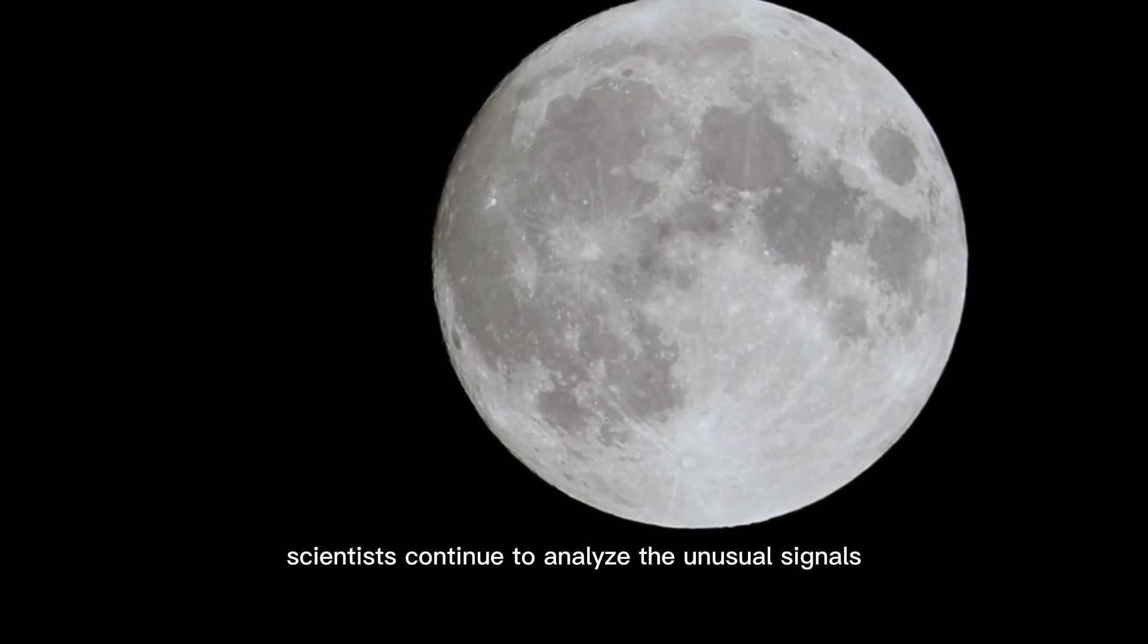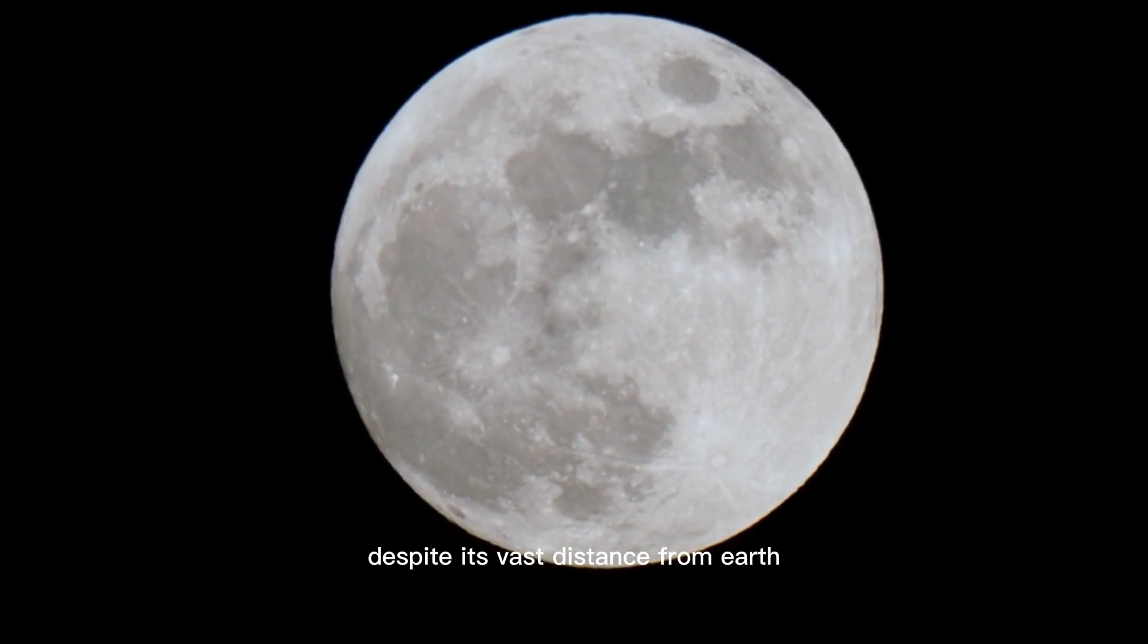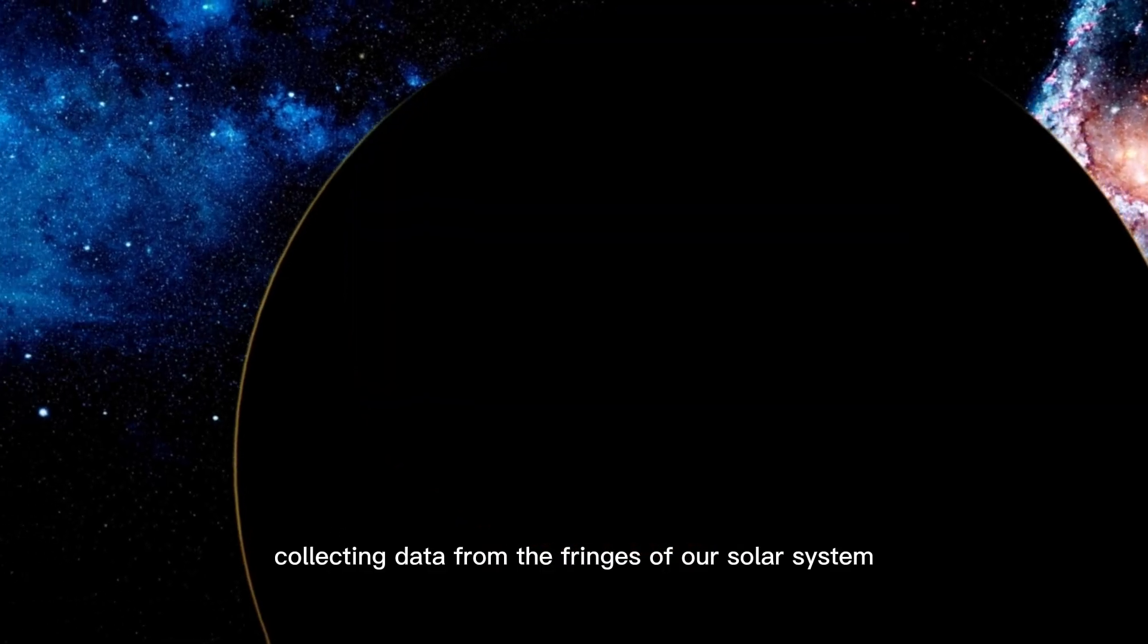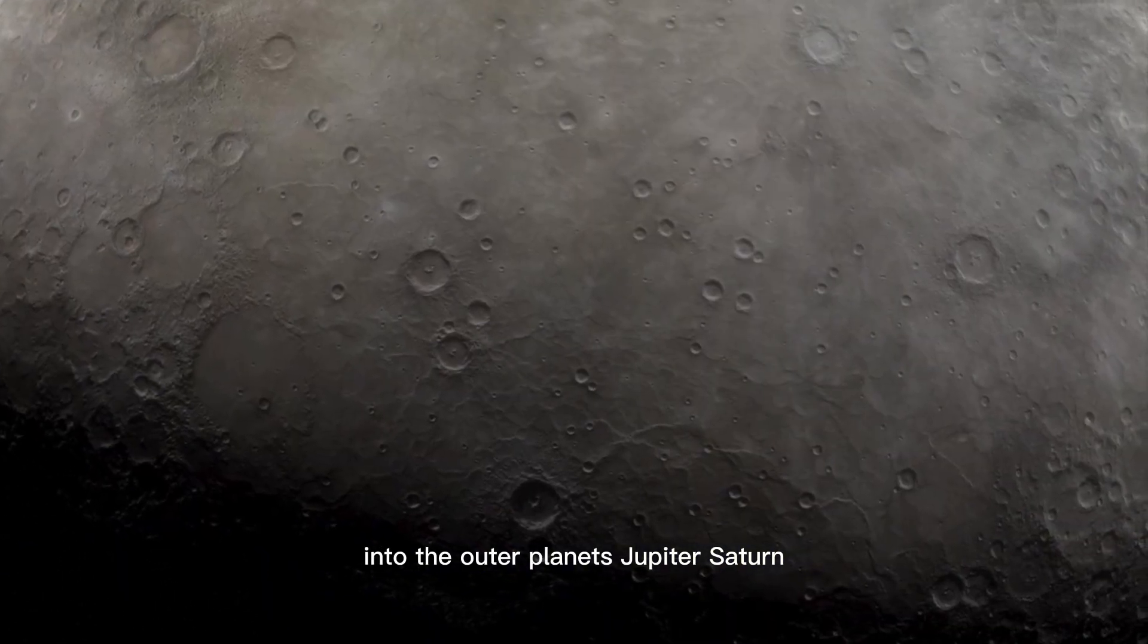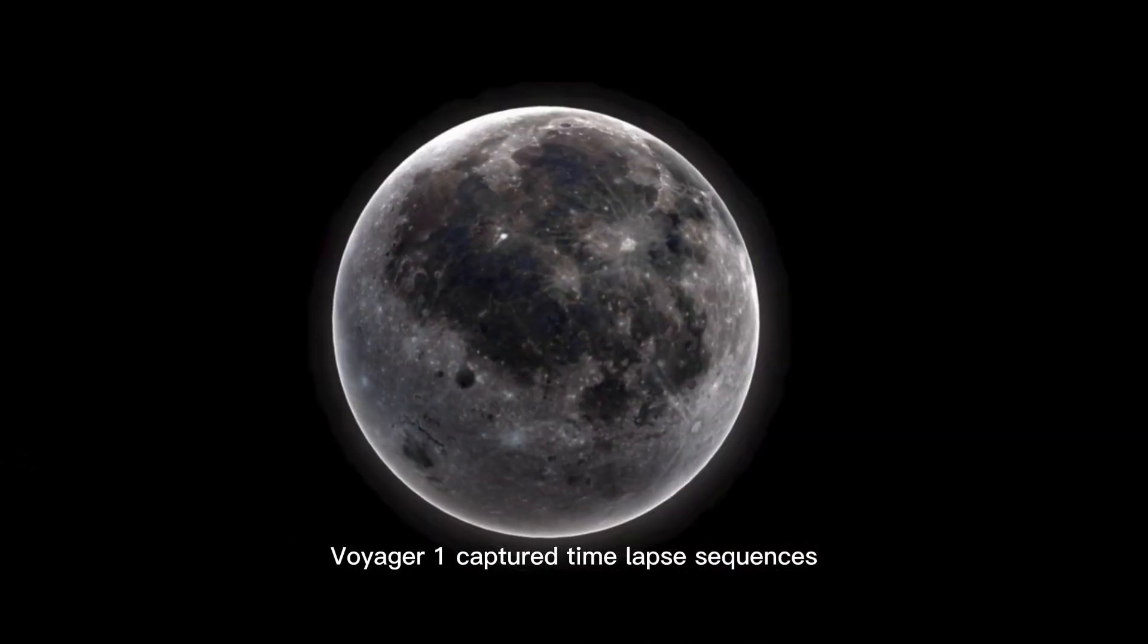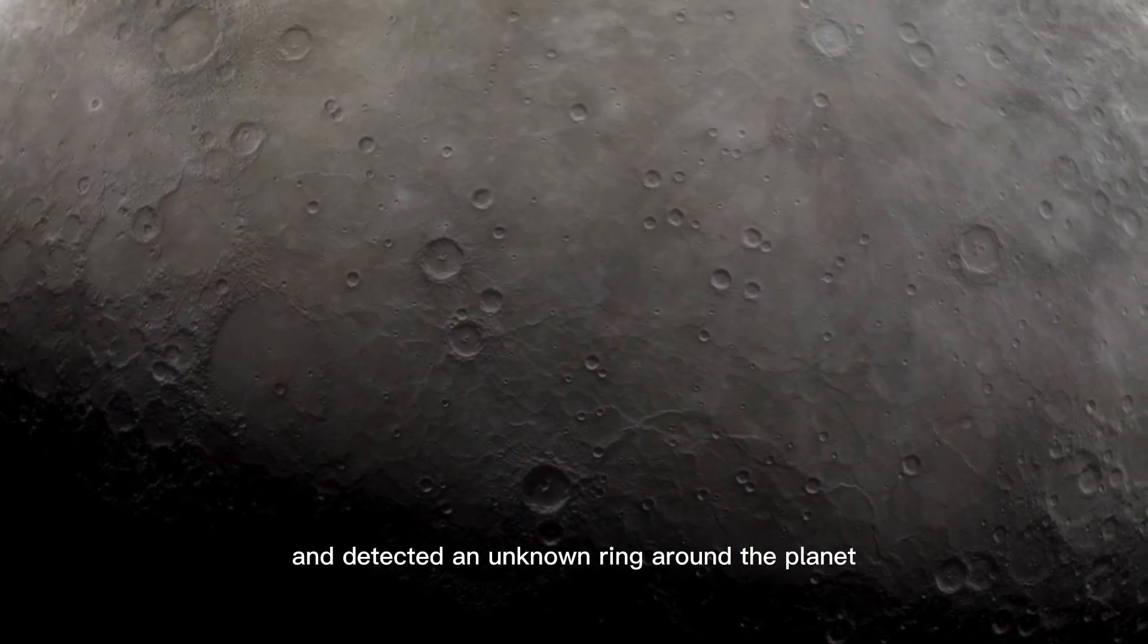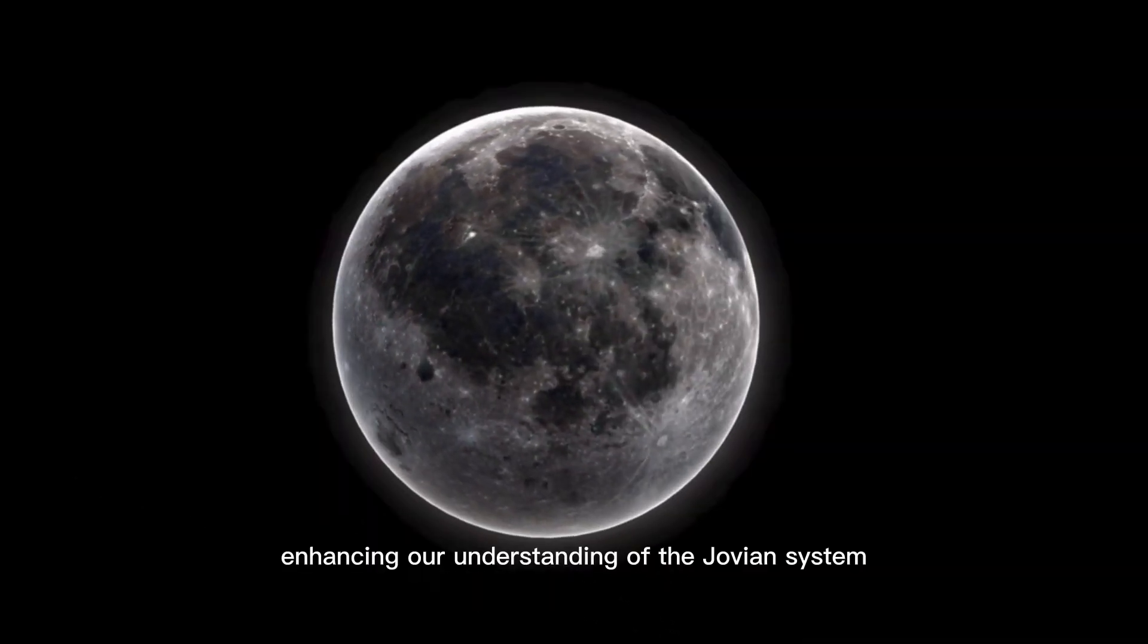Looking back on these extraordinary missions, scientists continued to analyze the unusual signals recently transmitted by Voyager 1. Despite its vast distance from Earth, the probe remains operational, collecting data from the fringes of our solar system. It has provided invaluable insights into the outer planets. Voyager 1 captured time-lapse sequences revealing 10 volcanic eruptions on Jupiter, discovered new moons, and detected an unknown ring around the planet.